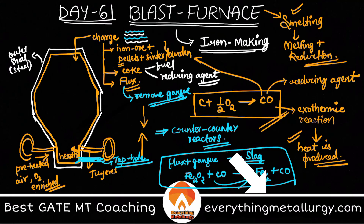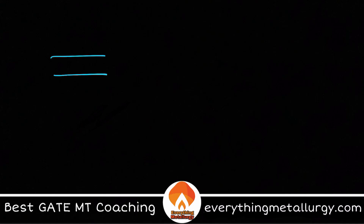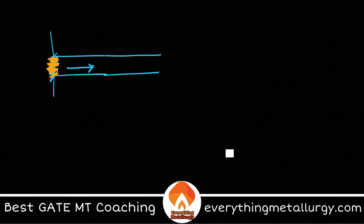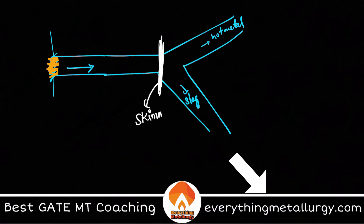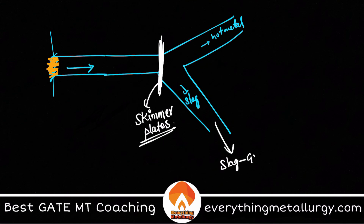Using a single tap hole, both hot metal and slag are separated later. When the tap hole is drilled open, the metal flows onto the runner. There are two different pathways — one for slag and one for hot metal. They are separated using a skimmer plate, based on their densities. Slag has lower density compared to hot metal, so they can be easily separated.